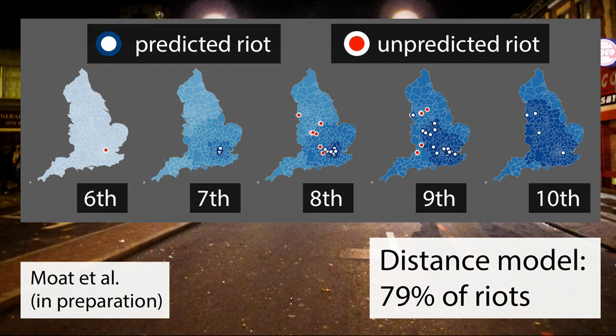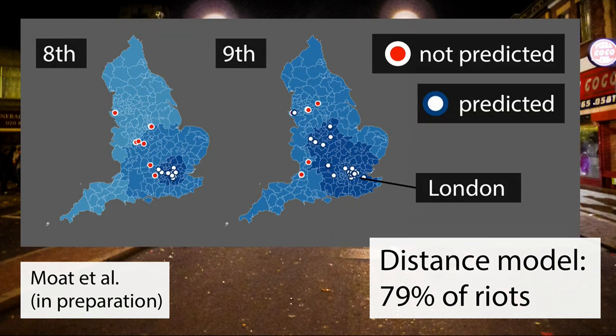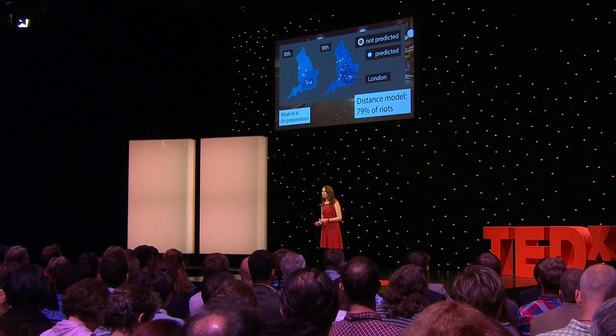So we tried this. Considering England as a whole, this model is pretty good. The riots started in North London and the blue dots show that the model correctly predicts that the riots spread through London for the days following. Overall, this model manages to find 79% of the times and locations at which the riots occurred. But there's a catch: the riots didn't just happen in London. The red dots show that on the 8th and 9th of August, the riots spread to cities in the north and the west of England too — and this model doesn't find them.